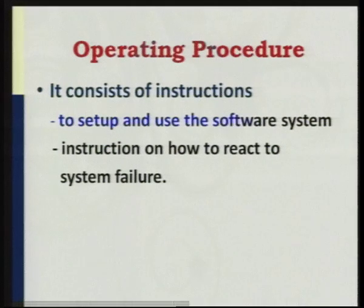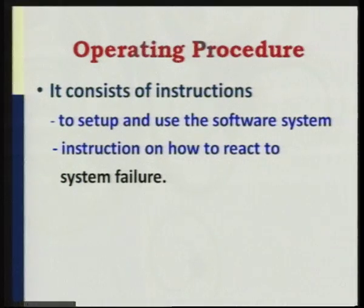Now for the third concept in the definition of software. Program is the normal coding — source code and object code. Documentation is an important aspect covering analysis, design, implementation, and testing. The third aspect of software is operating procedure. It consists of instructions to set up and use the software system, and it further gives instructions on how to react to system failure — how exactly the system should interact with the software to rectify failures. Software thus entails three different entities: the set of programs written, documentation, and the operating procedure.